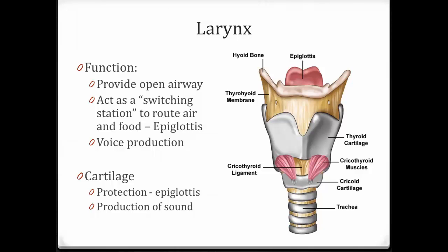The larynx is the next structure down — it's our voice box. It provides an open airway leading to the trachea and acts as a switching station to route air and food in the right direction. That's the job of the epiglottis: it folds over to make sure food goes down into the esophagus, while air goes only down into the larynx and trachea. The larynx also has numerous cartilages and muscles associated with voice production and protection of the epiglottis.